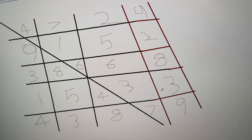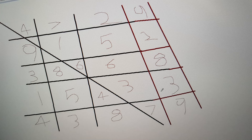Now that tells us the number 5 cannot be in the very centre square of the 7th grid, because of the position of it in the 9th grid. So we'll put in over here the number 2. Wonderful. And that means we have only one position left to fill, which by the process of deduction must be the number 5.